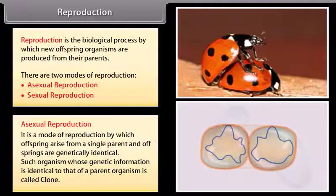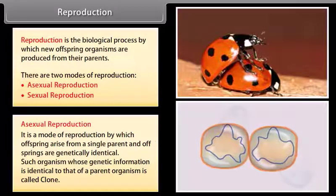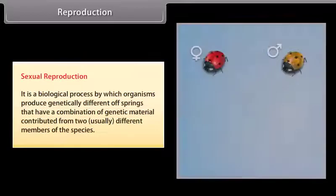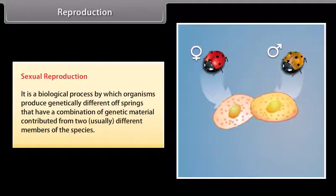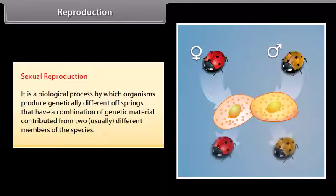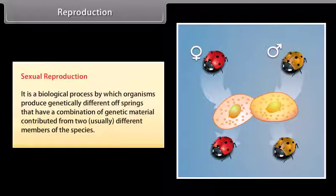Organisms whose genetic information is identical to that of a parent organism are called clones. Sexual reproduction is the biological process by which organisms produce genetically different offspring that have a combination of genetic material contributed from two usually different members of the species.